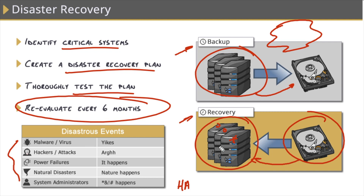These machines are usually geographically separated in separate data centers as well, to prevent a scenario where a disaster wipes out the whole cluster. If something were to happen to the machine that's online, one of the other machines in the cluster will assume responsibilities and come online — all within seconds — in a process known as automatic failover.